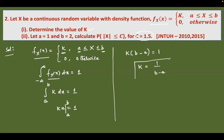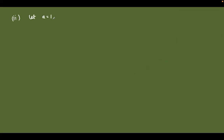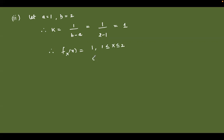This is the value of k. For the second part, we consider a = 1 and b = 2, and c = 1.5. Therefore k = 1/(b − a) = 1/(2 − 1) = 1. So the probability density function f(x) = 1, defined between 1 and 2, and 0 otherwise.